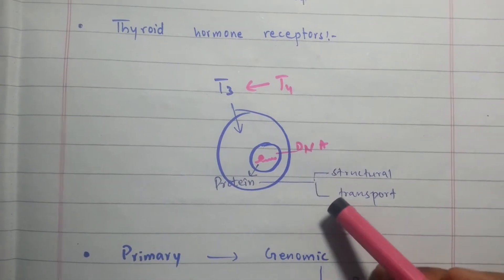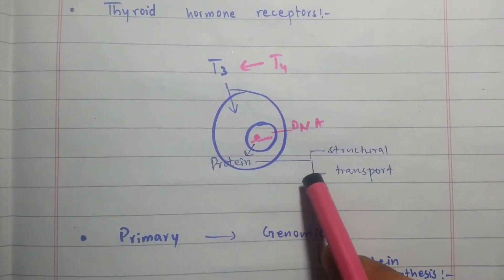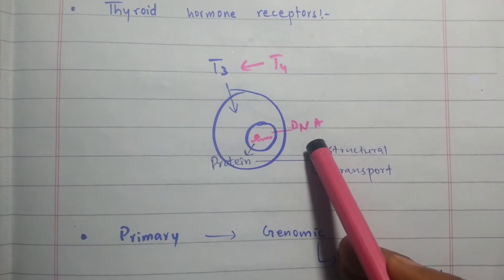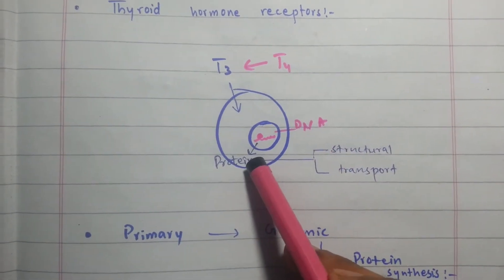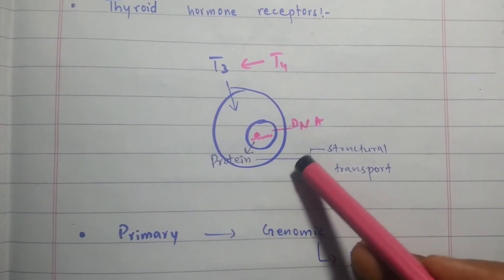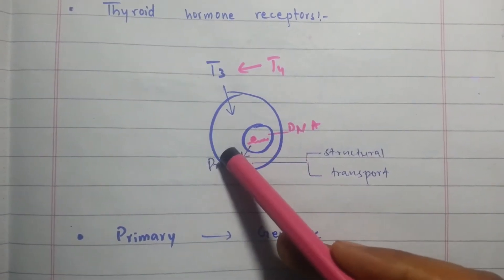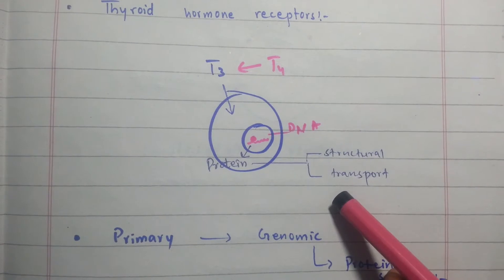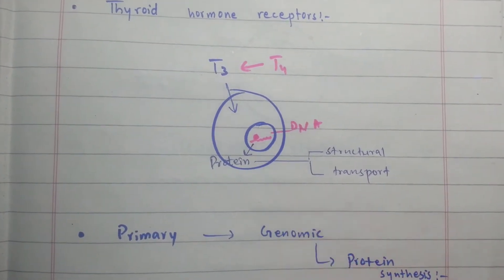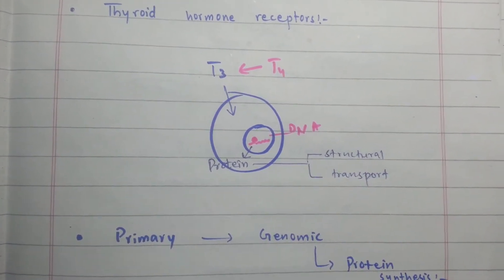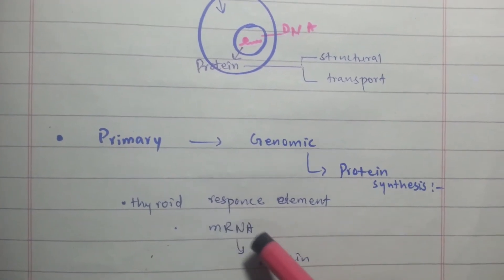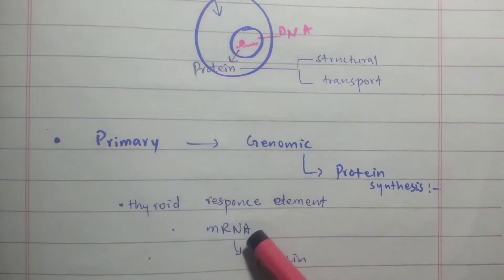T3 attaches on the thyroid hormone receptors on the DNA molecule and activates the thyroid response element. The thyroid response element converts the DNA molecule into messenger RNA, and from messenger RNA specific proteins are formed. These proteins are released from the nucleus into the cytosol and may be structural proteins or transport proteins depending upon the genes. This is the primary genomic effect of the thyroid hormone.